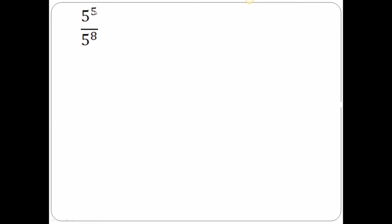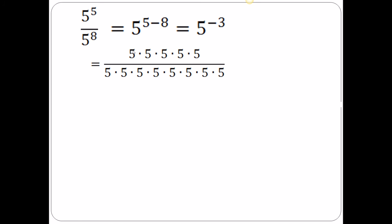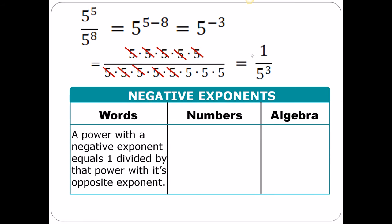Let's take a look at this problem: 5 to the fifth over 5 to the eighth. First of all, it's a division problem, so the division rule says if you have the same base, you just subtract your exponents — always numerator take away denominator. And 5 take away 8 is negative 3. Let's look at it this way: 5 to the fifth means I have five 5's in my numerator and 5 to the eighth means I have eight 5's in my denominator. That leaves 3 fives in the denominator, or 1 over 5 cubed.